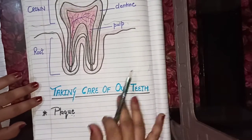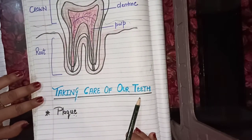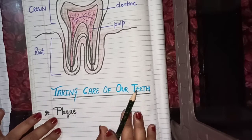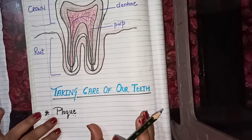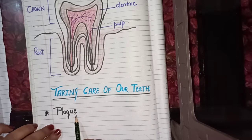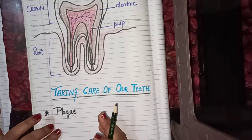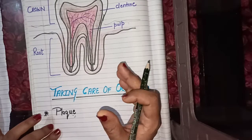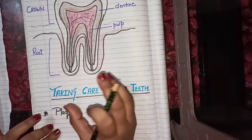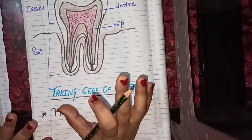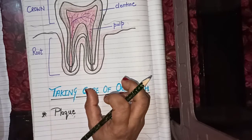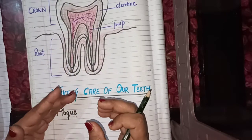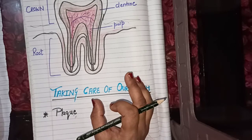Now the second topic is taking care of our teeth. Taking care of our teeth helps prevent plaque. But what is plaque? Plaque is a yellowish substance. You may have noticed some people's teeth get covered by a yellowish substance — that is plaque. And this substance gives a bad smell from our mouth.